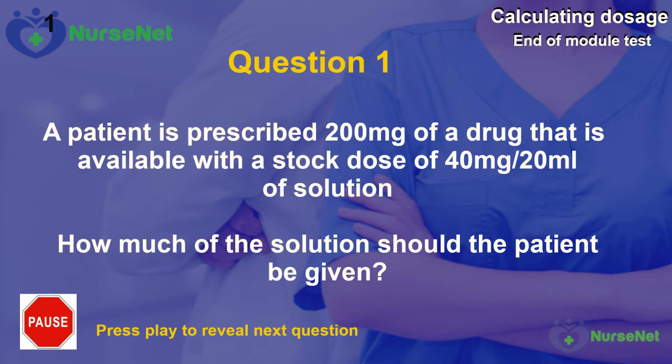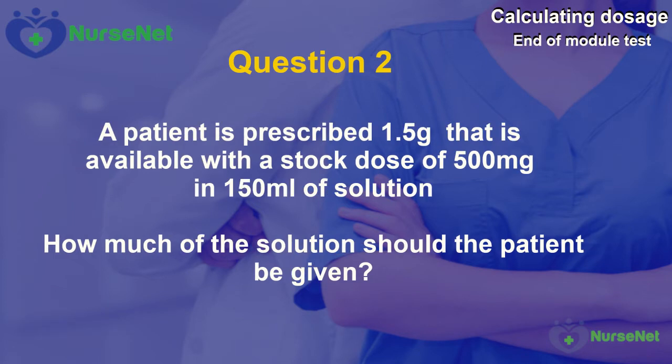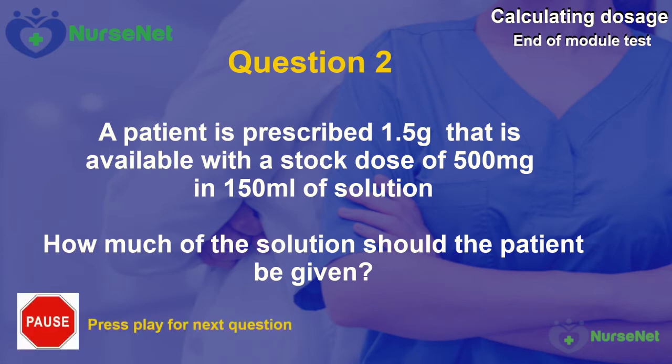Question 2. A patient is prescribed 1.5g of a drug that is available with a stock dose of 500mg in 150ml of solution. How much of the solution should the patient be given?